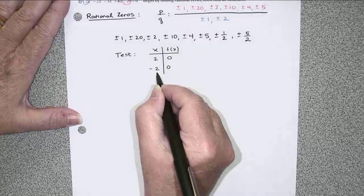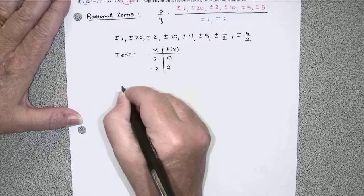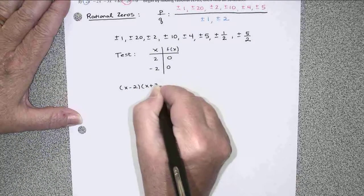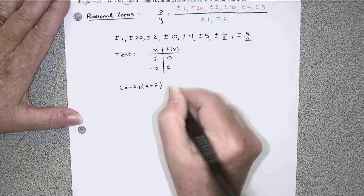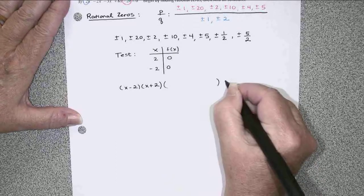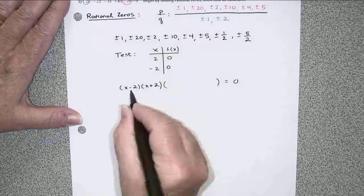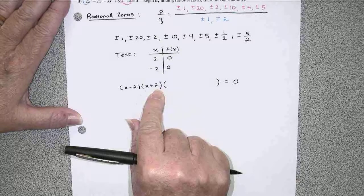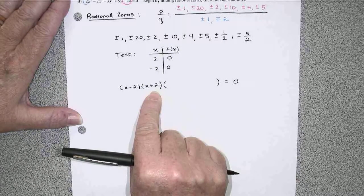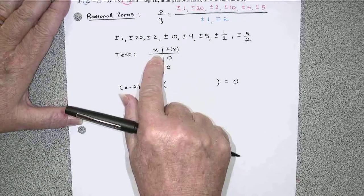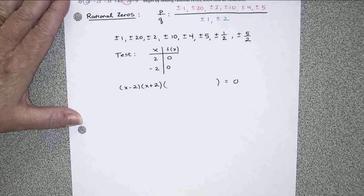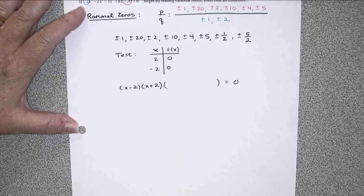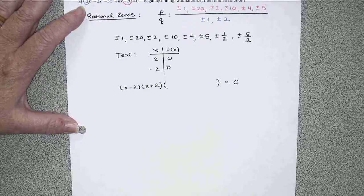That means that x minus 2 and x plus 2 times something else would be the factored form here. To figure out what happens when I factor out or divide out the x minus 2 and the x plus 2, we'll go ahead and divide our original polynomial. And once again, this is so large, I'm just going to use synthetic division. But do feel free if you'd rather to use the long division, that's fine.